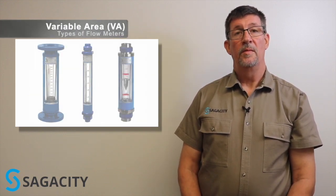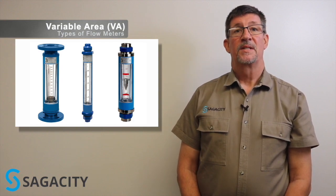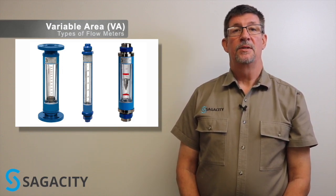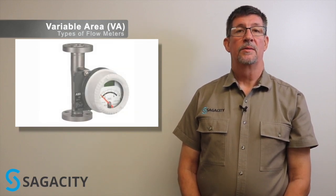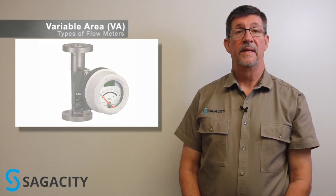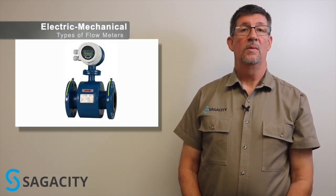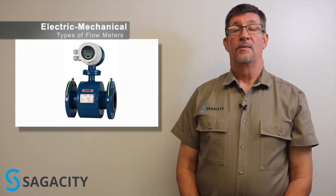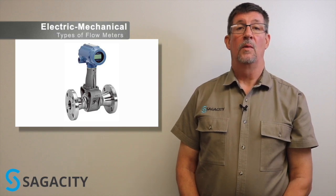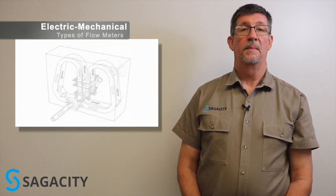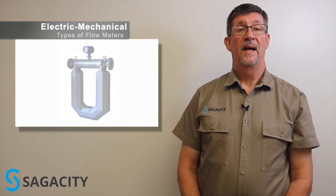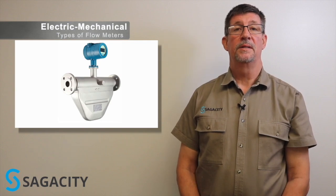Variable area meters or rotameters are used as sight flow meters for non-critical applications — purge meters, sparging meters, applications that don't require high accuracy or an output signal. They are very well known and have been used in industry for decades. Electromechanical meters are newer but still have quite a few standards written around them. Faraday's law for magnetic flow meters is very well understood, vortex shedding meters are well characterized, and Coriolis meters — which can compensate for density changes — have become quite popular in the last 30 to 40 years and are one of the best understood newer technologies in industry today.